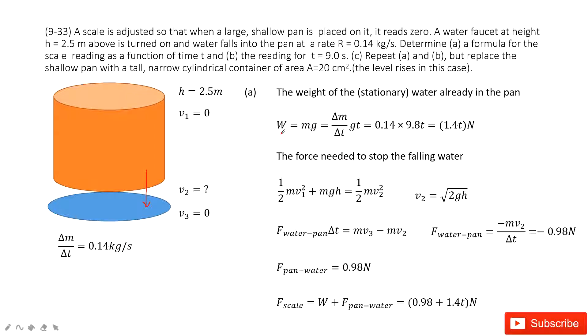So that means the gravity of the water in the pan is the mass times g. And this mass changes with t, so we use dm/dt times t. This is this one.